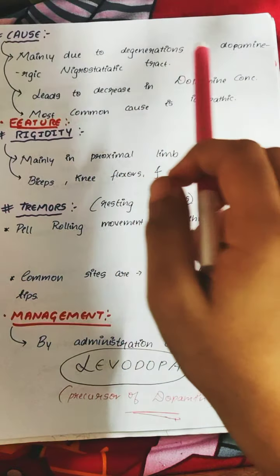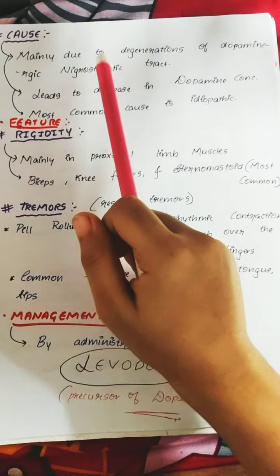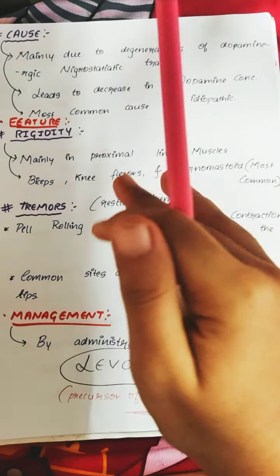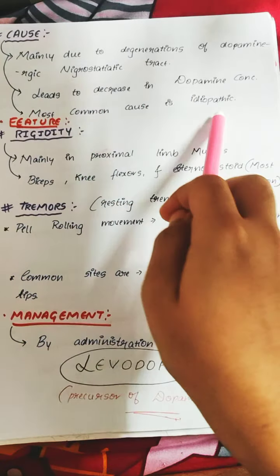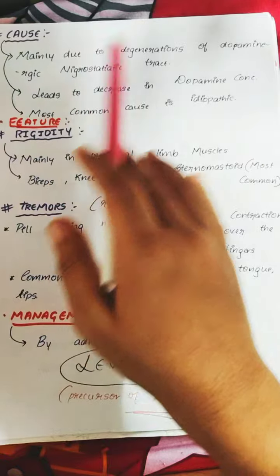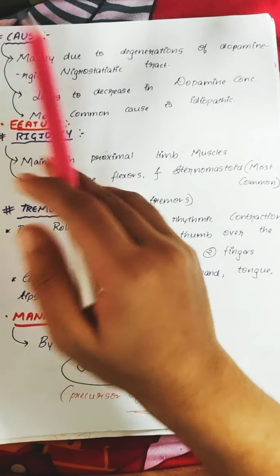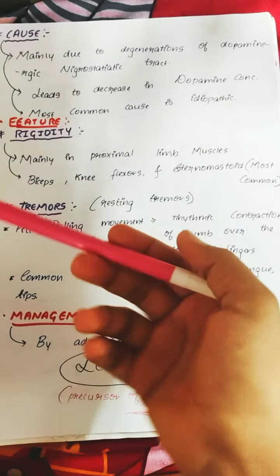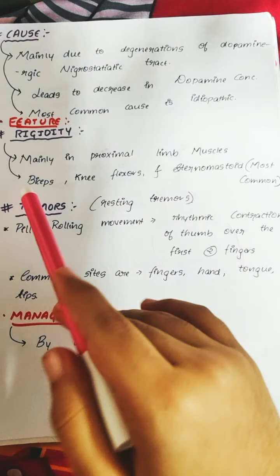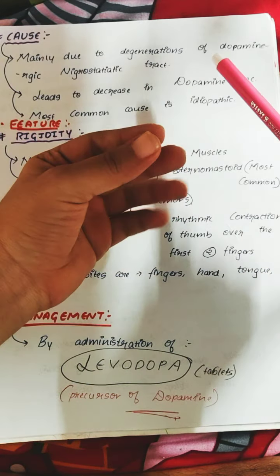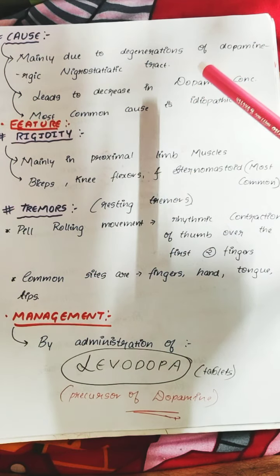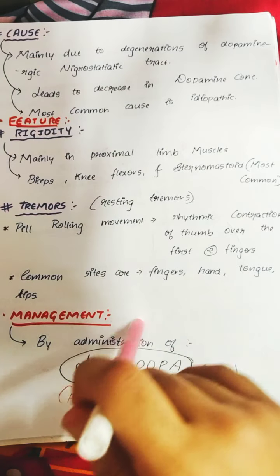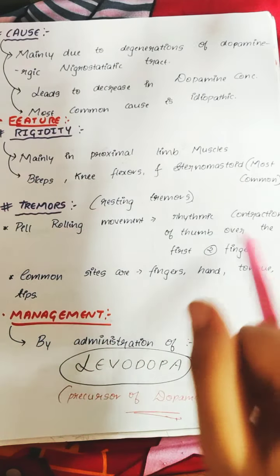The cause of Parkinson's disease is mainly degeneration of the dopaminergic nigrostriatal tract, leading to decreased dopamine concentration. The most common cause is idiopathic — not fully known. Features include: rigidity in proximal limbs (biceps, knee flexors, sternocleidomastoid most commonly), resting tremors, and pill-rolling movement — a rhythmic contraction of the thumb over the first two fingers. Tremors commonly start in the fingers, hands, tongue, and lips.